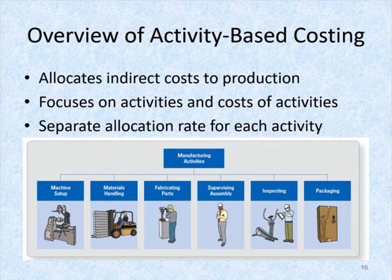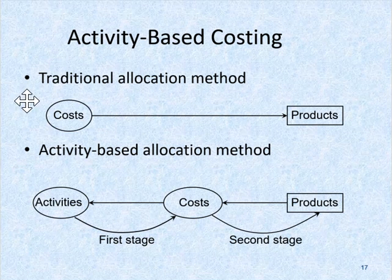Each product manufactured may have different types and amounts of activities. Thus activities become the building blocks for compiling the indirect cost of products and services. Here you can see the traditional allocation method — we start with costs and assign them to products using a single overhead plant-wide rate.